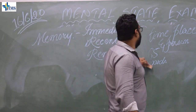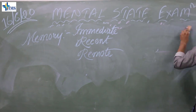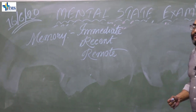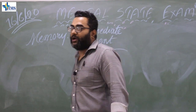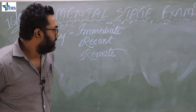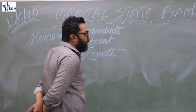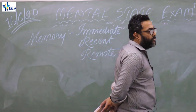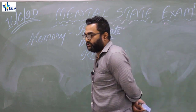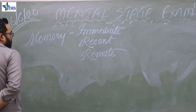Immediate memory is the memory of the past few minutes, which is basically found in the registration of all sensory perception stimuli, and how much the patient is able to recall. Recent memories are events from the past few months, while remote memories are old memories, which are pretty intact in most patients.